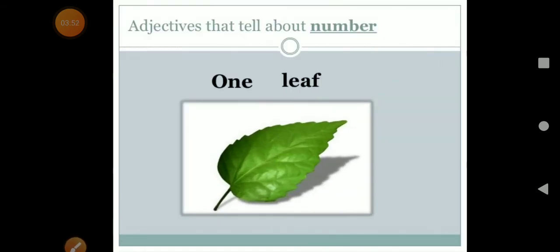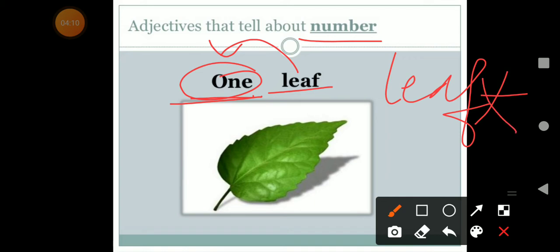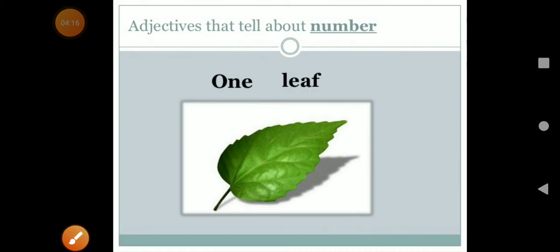So adjective will tell about the number. For example, leaf. Leaf is a noun and how many leaves? One. So remember one thing, adjectives are placed just before the noun. Adjectives are placed just before the noun. Leaf is a noun, so we will not place the adjective after it. Where will we place it? Before. So one leaf. We place the adjective just before the leaf.